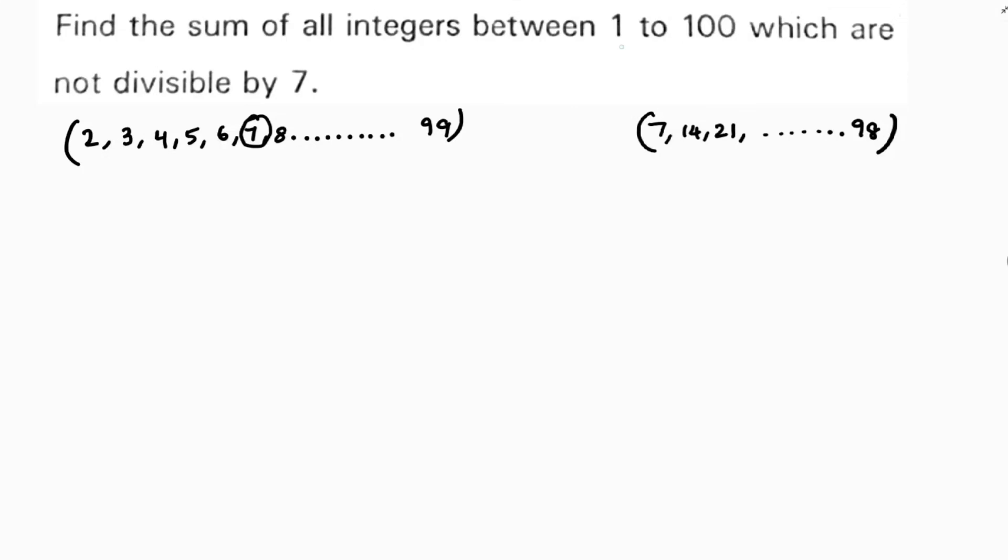Then I'll get total integers between 1 to 100 which are not divisible by 7. I'll add all the integers from 2 to 99, then I'll subtract all the multiples of 7. So that's what they want. They want all the integers, sum of all the integers but they don't want the multiples of 7.